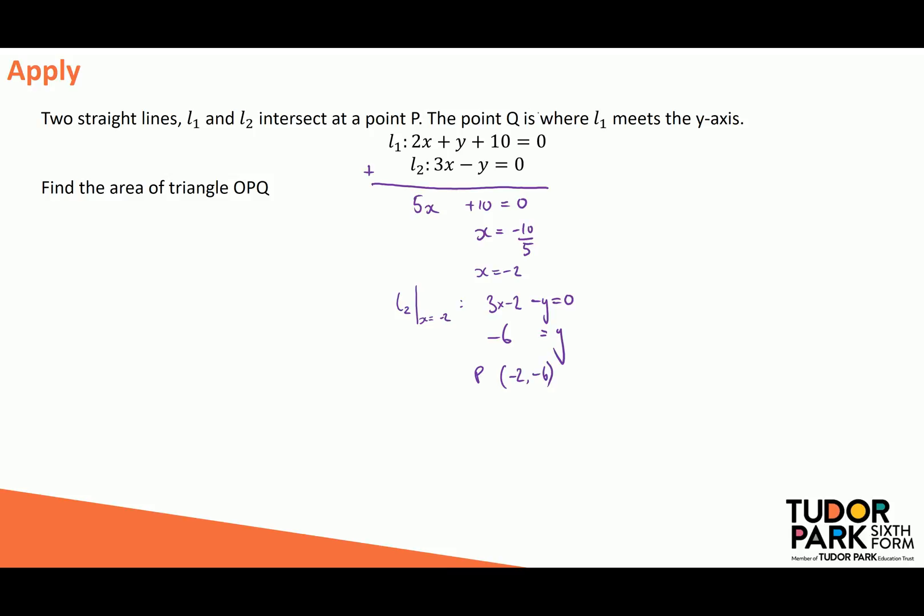The point Q is where L1 meets the y-axis. Well, if I'm thinking about my y-axis, that's code for x being 0, so let's do that in L1 and evaluate that at where x equals 0. That would be to say that y plus 10 is equal to 0, or y is equal to negative 10. So now I've got the coordinates of point Q, which is going to be 0 in my x and minus 10 in my y.